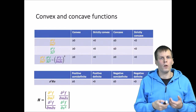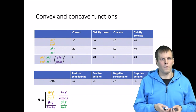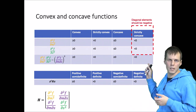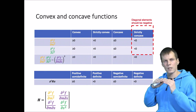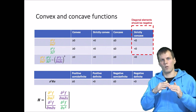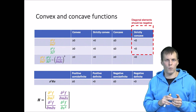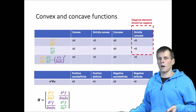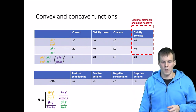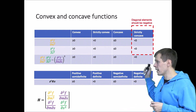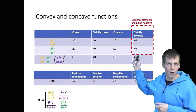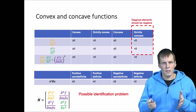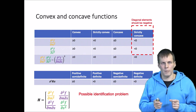For the Hessian to be negative definite and the function to be concave, the diagonal elements should be negative. This guarantees that if you adjust x, s, or m a little, the likelihood will be smaller — meaning we are possibly at the maximum and can't improve by going anywhere. There is also a condition relating to the off-diagonal elements: if any off-diagonal elements are zero, it indicates the model is not identified for that particular parameter.